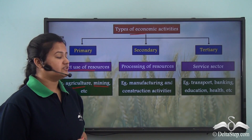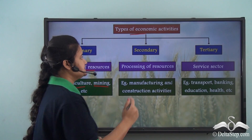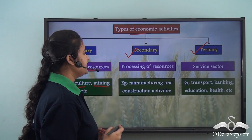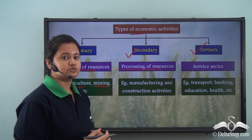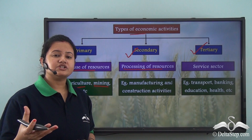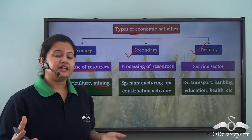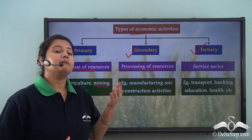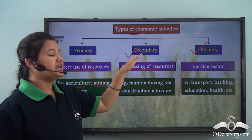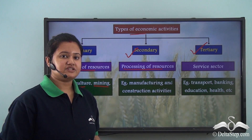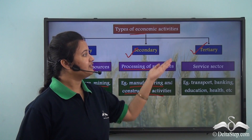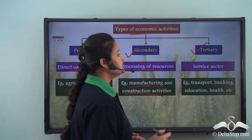Just like primary activity, we have two more economic activities: secondary and tertiary. In case of secondary activity, there is processing of raw materials or resources in order to convert them into valuable products. For example, raw cotton is processed into yarn and timber is processed to obtain paper. So secondary activities include manufacturing and construction activities.